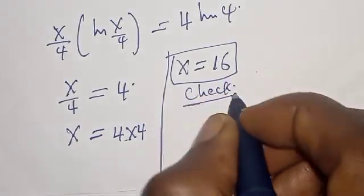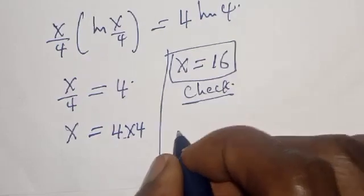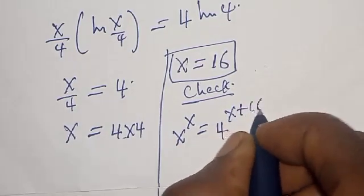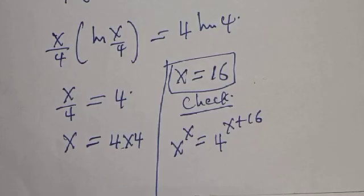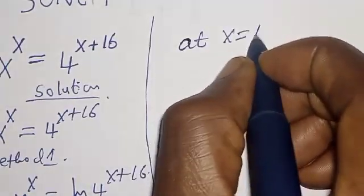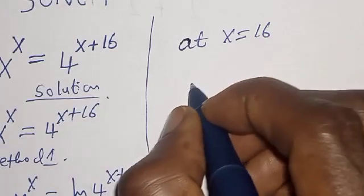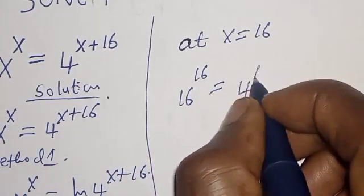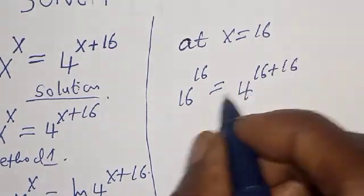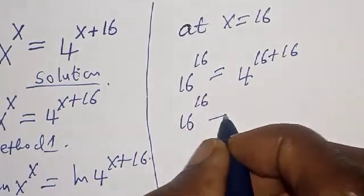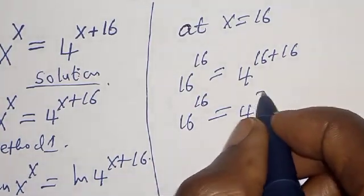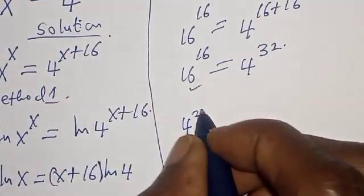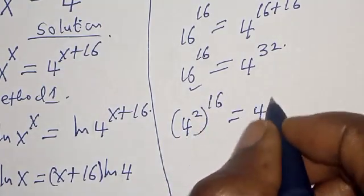Now we can check to confirm if our answer is right. We have the given equation x raised to power x is equal to 4 raised to power x plus 16. At x equal to 16, we have 16 raised to power 16 is equal to 4 raised to power 16 plus 16, which is 4 raised to power 32. On the left side, 4 squared raised to power 16 equals 4 raised to power 32. We satisfy the given equation at x equal to 16.